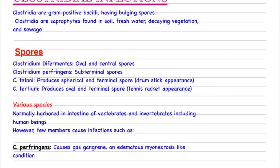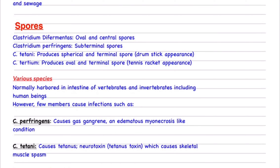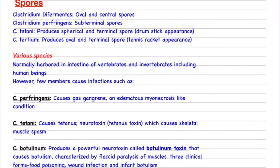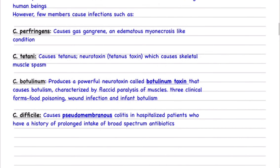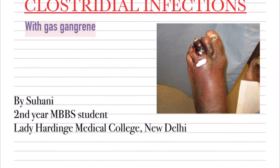There are many Clostridium species. Normally they exist in the intestine as normal flora, but certain members can cause infection. For example, Clostridium perfringens causes gas gangrene — as shown in the image — which is a gaseous collection in subcutaneous tissue with tissue destruction.